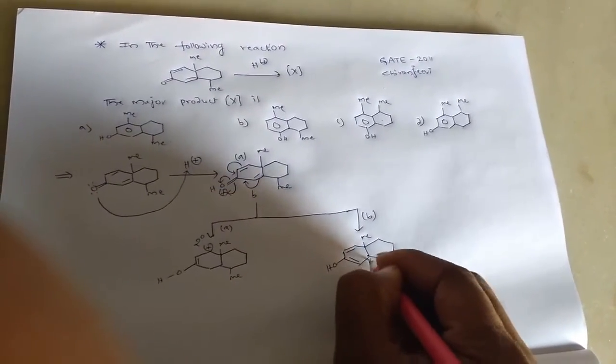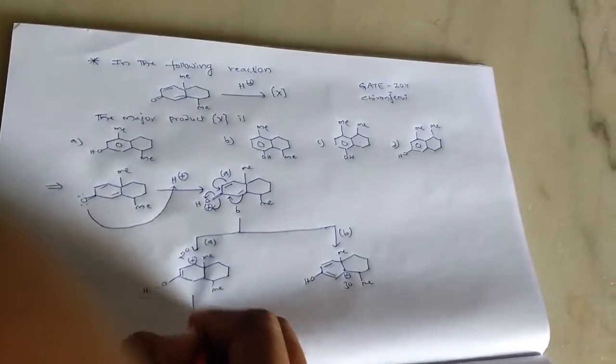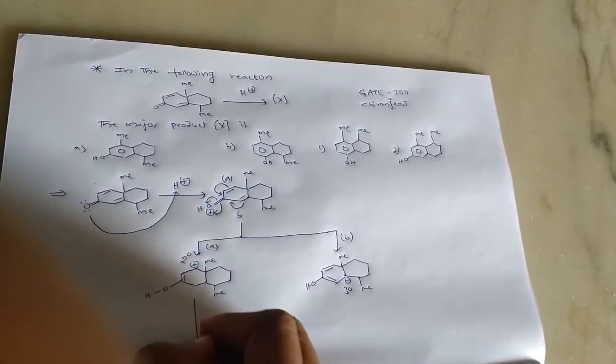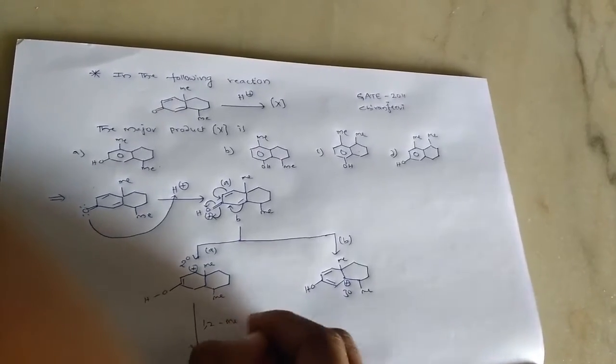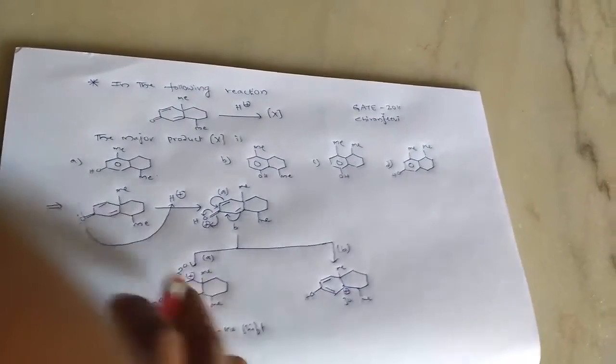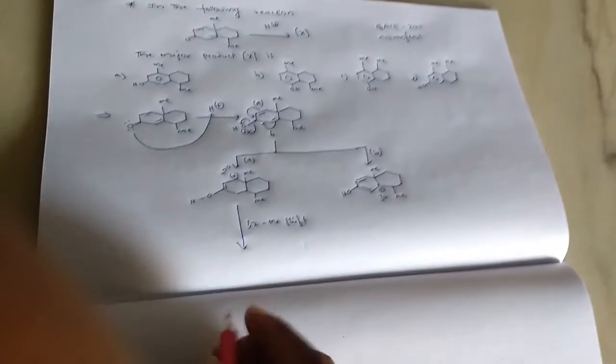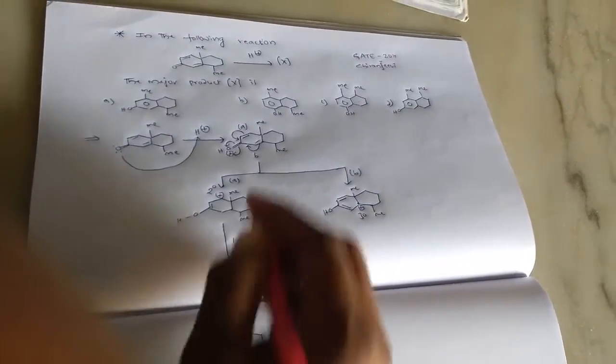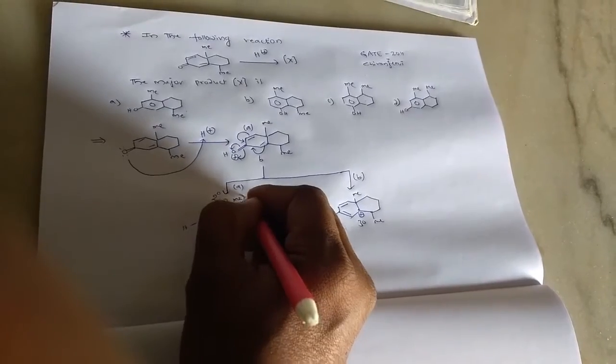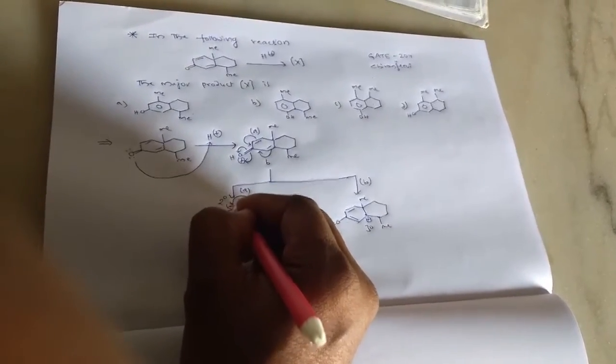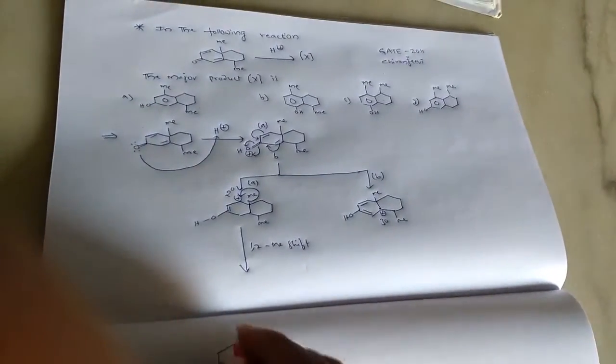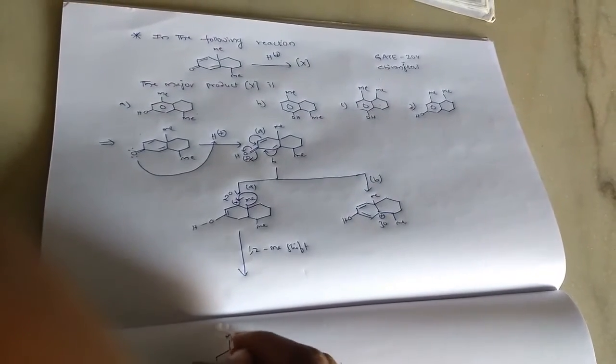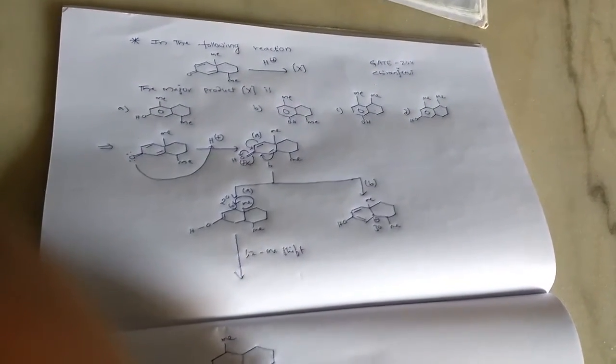So this is tertiary carbocation. And then further, one-two methyl shift on A, so we'll get one-two methyl shift. This methyl group shifted towards this one, and then you can observe formation of tertiary carbocation.